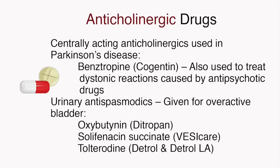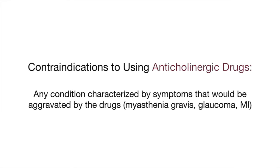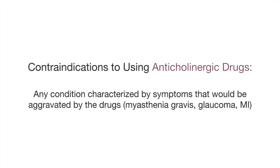Urinary antispasmodics are given for overactive bladder and include oxybutynin, or Ditropan; solifenacin succinate, or VESIcare; and tolterodine, or Detrol and Detrol-LA. Contraindications to using anticholinergic drugs include any condition characterized by symptoms that would be aggravated by the drugs, such as myasthenia gravis, glaucoma, or an MI.